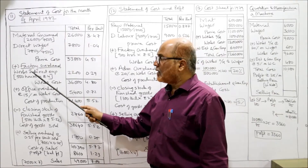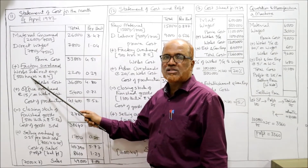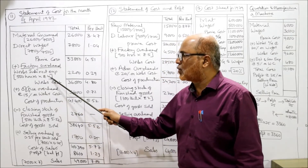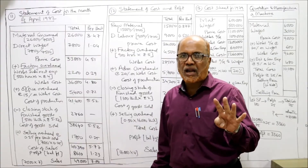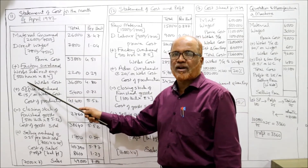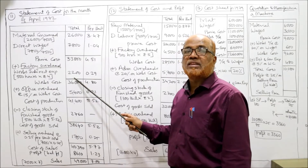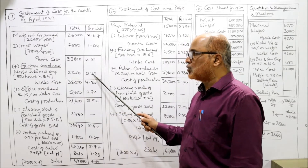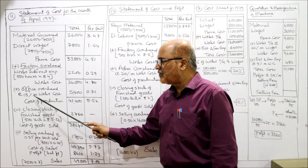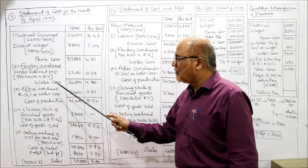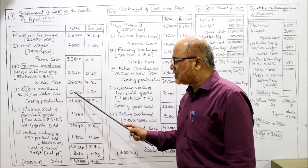Factory overhead: 550 machine hours at 4 rupees per hour = 2,200. Per unit: 2,200 ÷ 7,500 = 0.29. Works cost total is 36,000 at 4.80 per unit. Office overhead is 15% on works cost: 36,000 × 15% = 5,400.